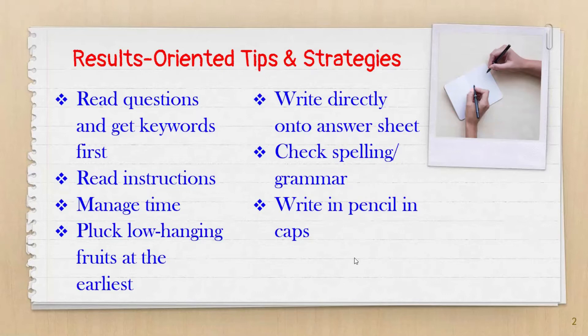So for example, in the heading of this particular slide, I have results-oriented tips and strategies. So results-oriented, that's one word, tips two, and then for the third one strategies. You need to pay attention to the word limits as part of the instructions. Also, you may have instructions on how your answers should appear. For example, for questions 30 to 40, write A, B, C, or D. If you write the words that correspond with these letters, definitely your answers would be marked wrong. So read every instruction before you tackle any set of questions.